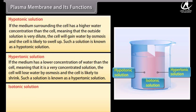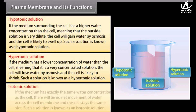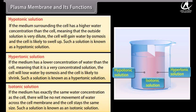Isotonic solution: If the medium has exactly the same water concentration as the cell, there will be no net movement of water across the cell membrane, and the cell stays the same size. Such a solution is known as an isotonic solution.